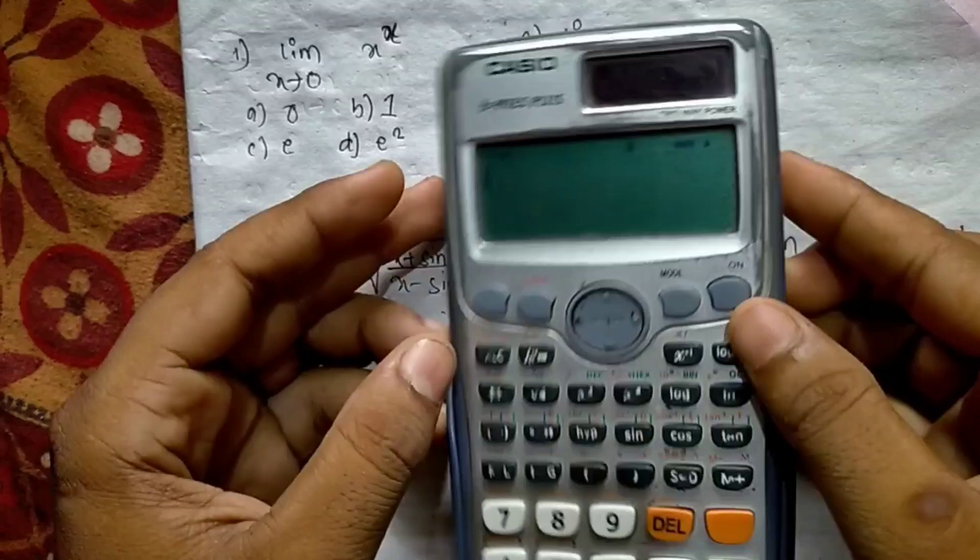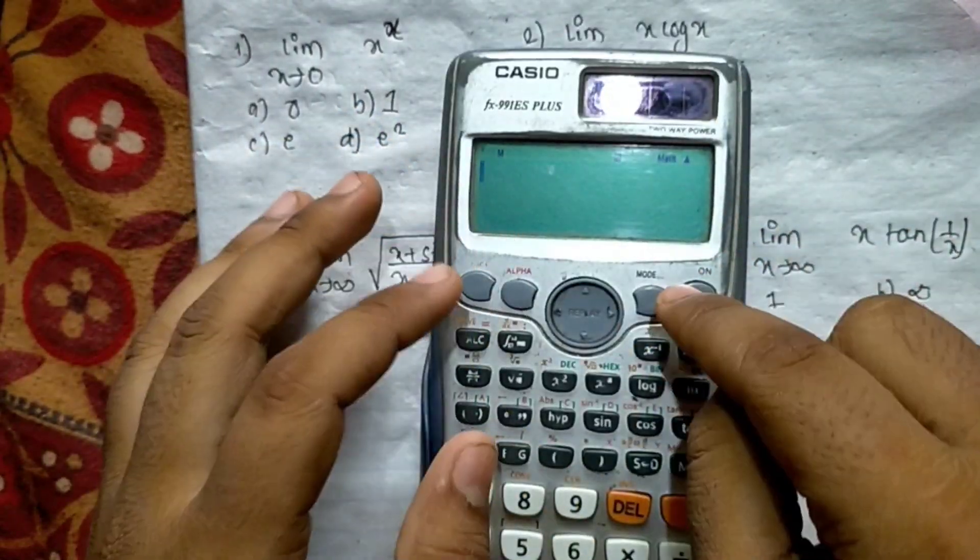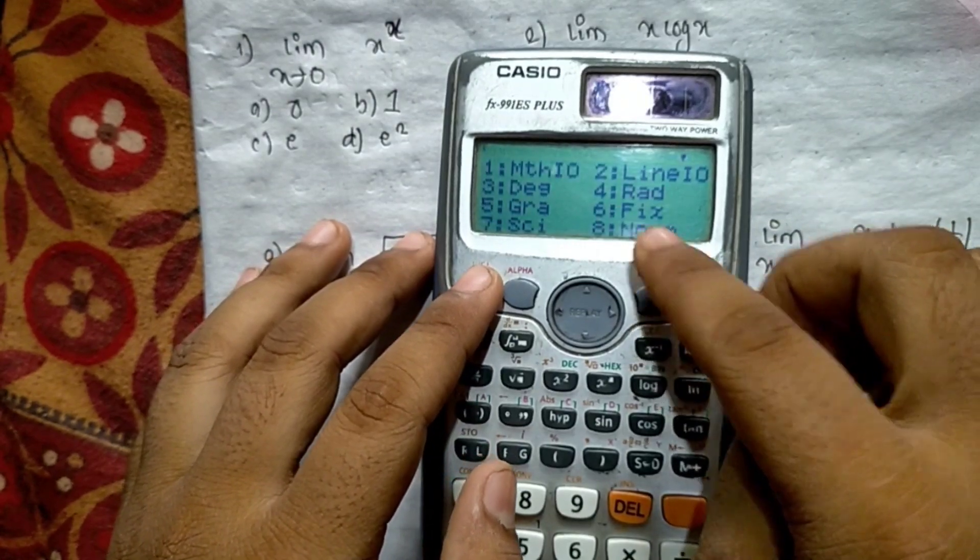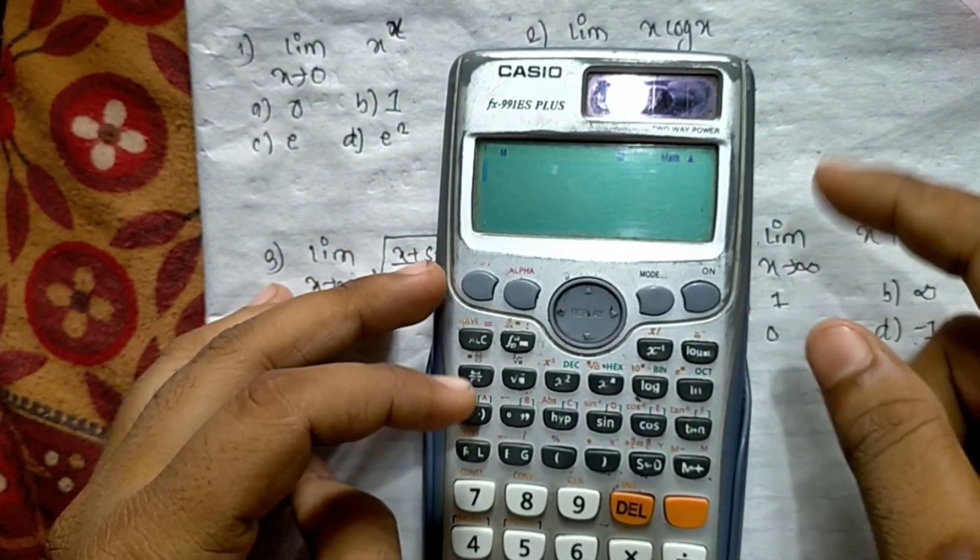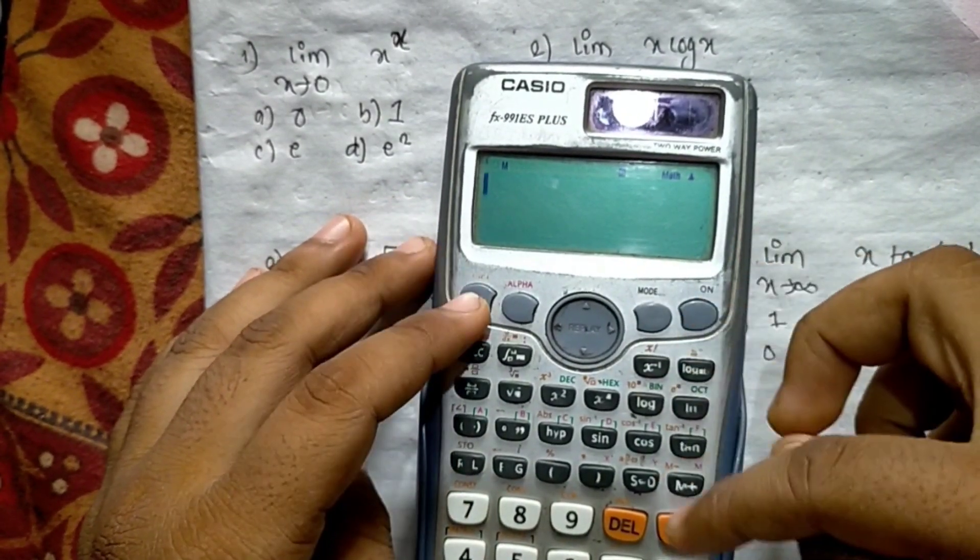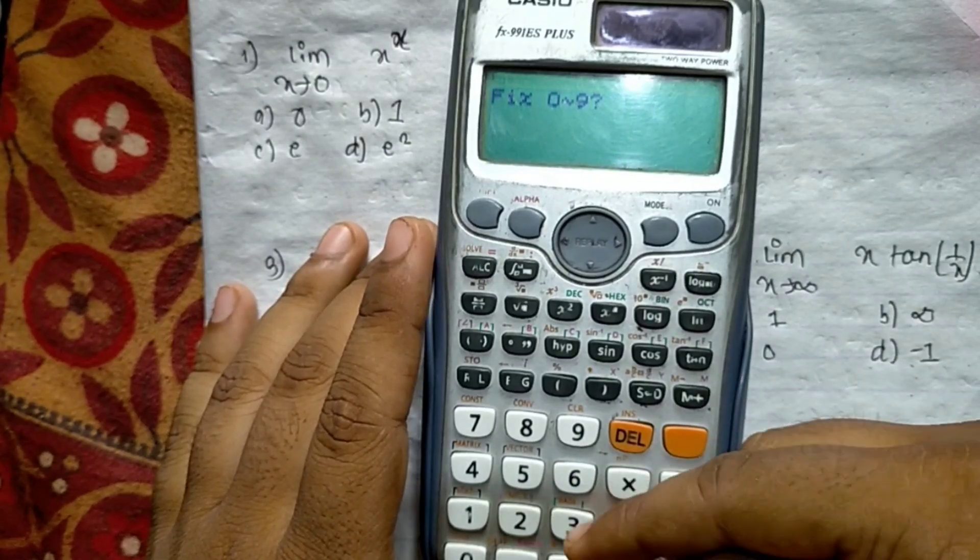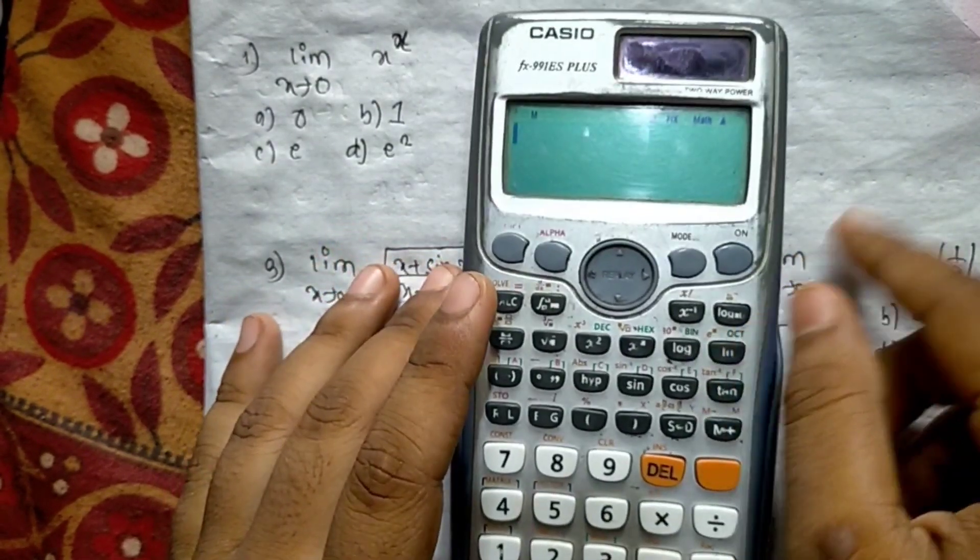I am using the radian mode. The radian will be saved with shift mode. Press shift, then mode, then 4 for radian. Next, shift mode and fix 3, so the exact answer will be made and I am doing this method.